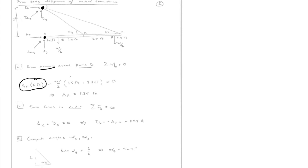We also have W over 2 — one at a distance of 1.5 feet, and another at a distance of 1.5 plus 2.5 plus 3.5, so that's 7.5 feet. They're both acting clockwise, so they're negative. That all has to equal zero. The only unknown left is AX, and we can solve for it — it ends up being 1,125 pounds.